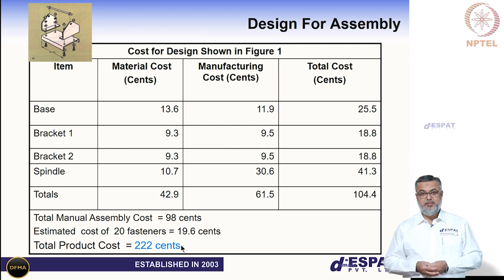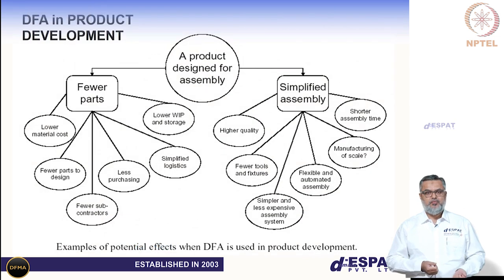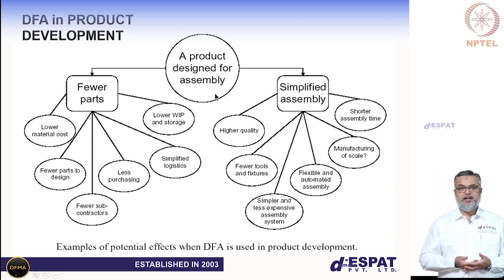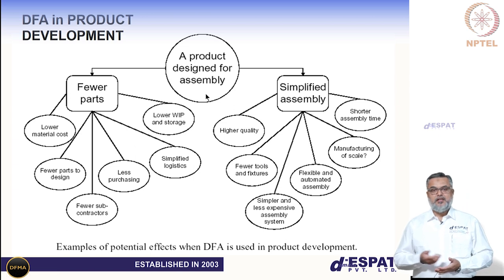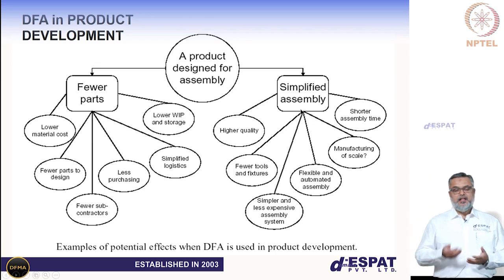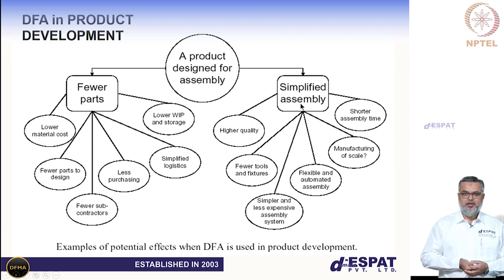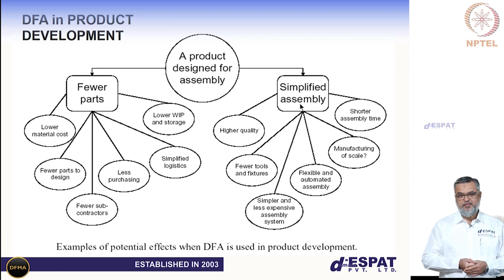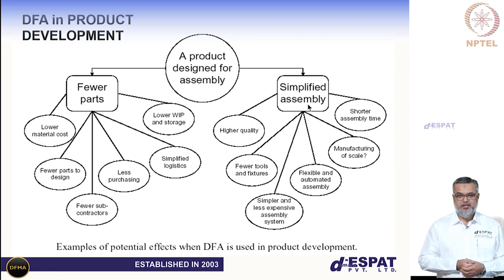That is what the Design for Assembly module is intended to do. There are two main benefits: first, having a product with fewer parts that achieves the intended functionality; and second, having a simplified assembly. Fewer parts means lesser inventory, fewer processes, fewer drawings to verify, and fewer subcontractors. A simplified assembly also facilitates maintenance, repair, warranty, and service requirements throughout the product's life cycle.